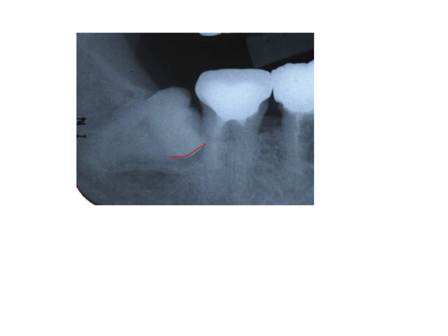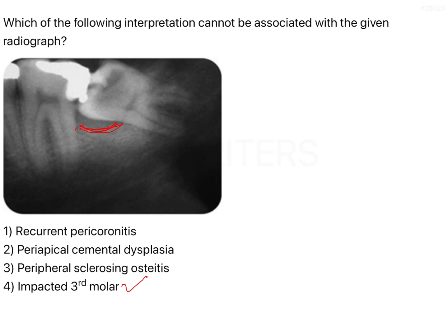That bone loss is what you are seeing as the radiolucency below the crown in the radiograph. To make it simpler: the crown ends here and the radiolucent gap indicates bone loss due to recurrent pericoronitis. So from the given radiograph, both 'impacted third molar' and 'recurrent pericoronitis' can be associated with the radiograph.